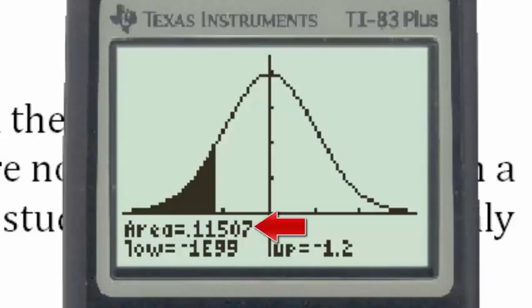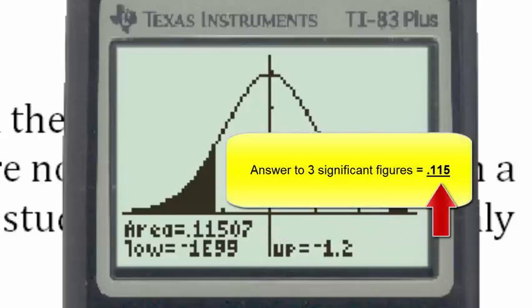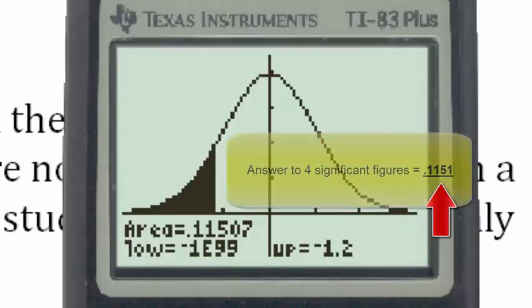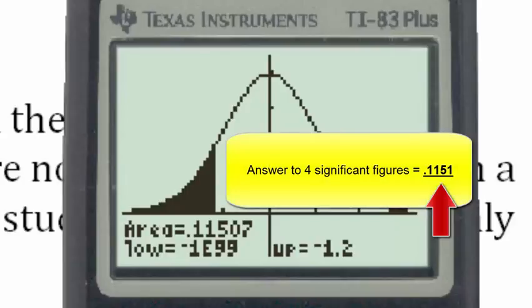In this problem, we were asked to find this probability to three significant figures. That means that the answer will be 0.115. Had we been asked to find the answer to four significant figures, then the answer would have been 0.1151, because we would have rounded to the fourth decimal place.